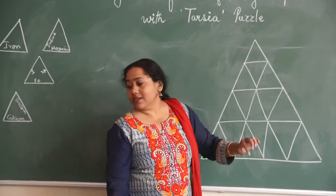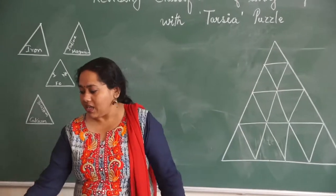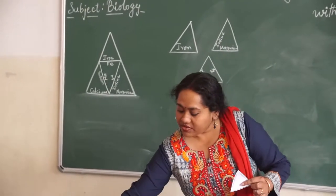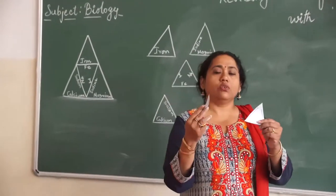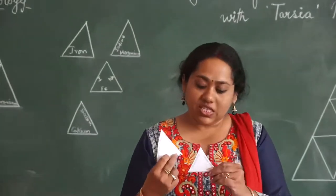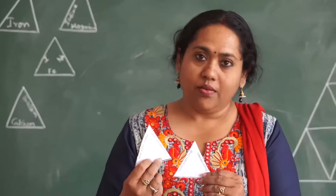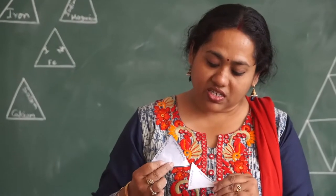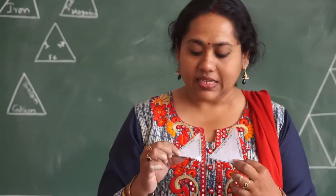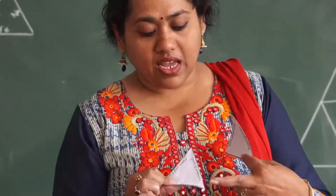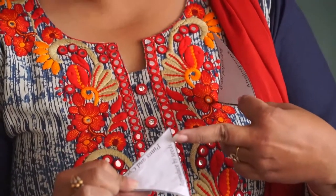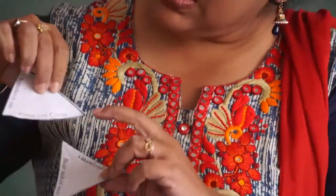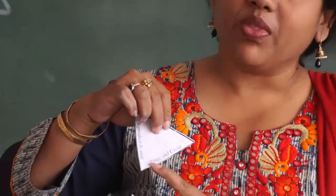Inside the triangle, I am going to show you this kind of content. So in this triangle, here it is written Angiosperm, here it is written Bare Naked Seeds, here it is written Reproduced by Seeds, and here it is written Pinus and Cycas.